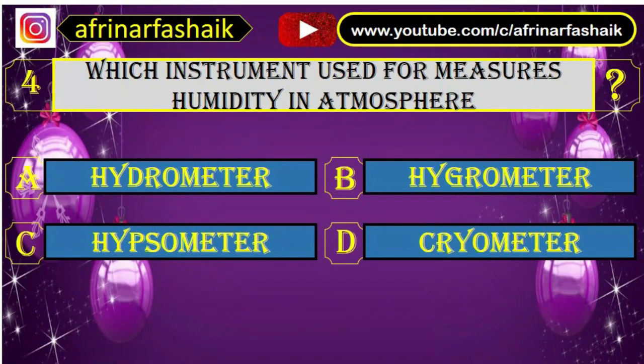Question number four: which instrument is used to measure humidity in the atmosphere? Your options are A. Hydrometer, B. Hygrometer, C. Hypsometer, and D. Cryptometer.